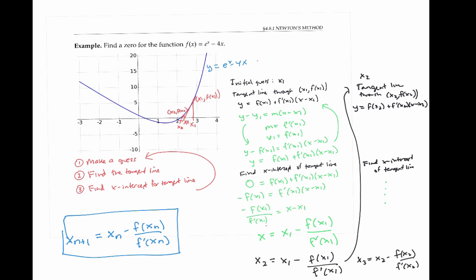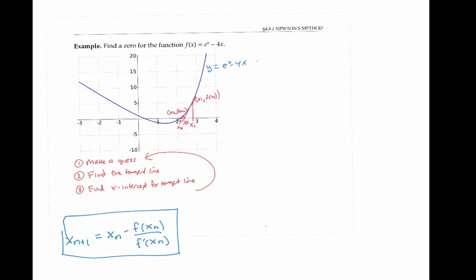Now that we've got the theory down, let's grind through the problem at hand with some numbers. Our function has the equation f(x) = e^x - 4x. So f'(x) = e^x - 4. From Newton's method equation, we have, in general, x_{n+1} = x_n - (e^{x_n} - 4x_n)/(e^{x_n} - 4).